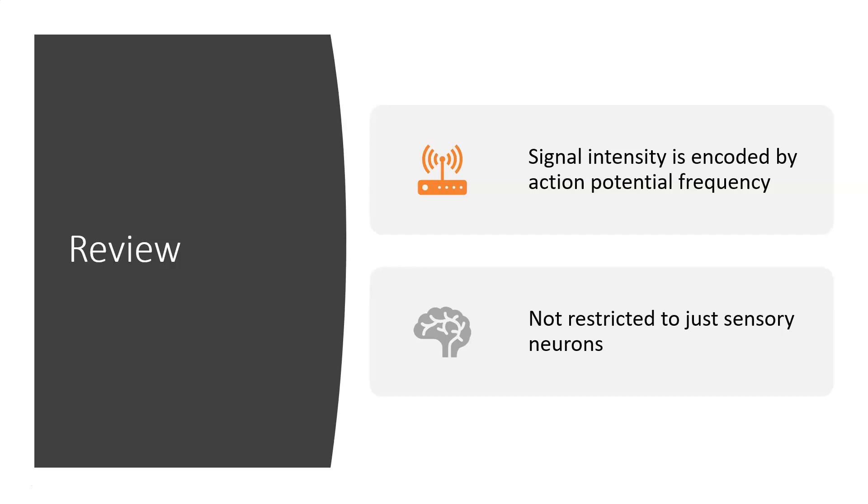So here, I showed you that signal intensity is encoded by action potential frequency. You can kind of think of it as someone trying to get your attention by tapping your shoulder. You're more likely to realize this person's trying to grab your attention if they tap rapidly and multiple times instead of tapping slowly a couple times.